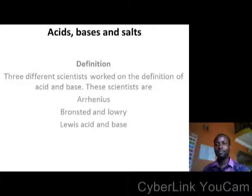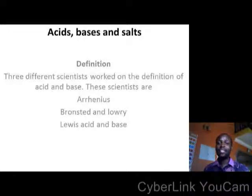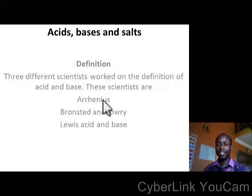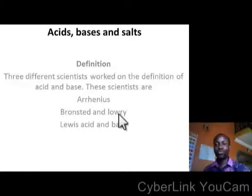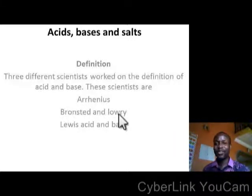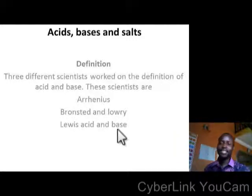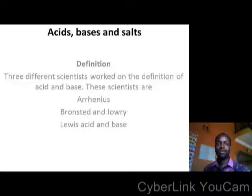Now, Acid. Acid has been defined by three great scientists. Number one is Arrhenius, as you can see. Number two, there are two great scientists — Bronsted and Lowry — so put together, their name is Bronsted-Lowry. Number three is Mr. Lewis, and he gave a designation on Acid and Base. Let's move on to the second slide.